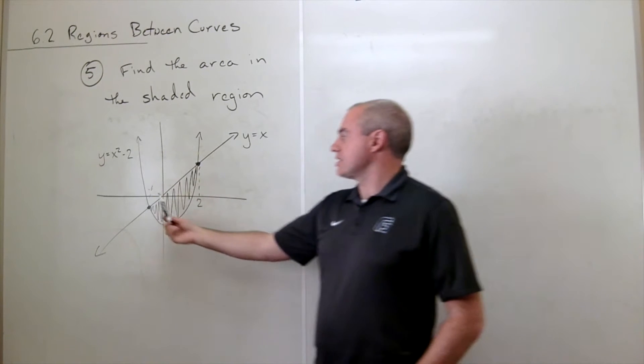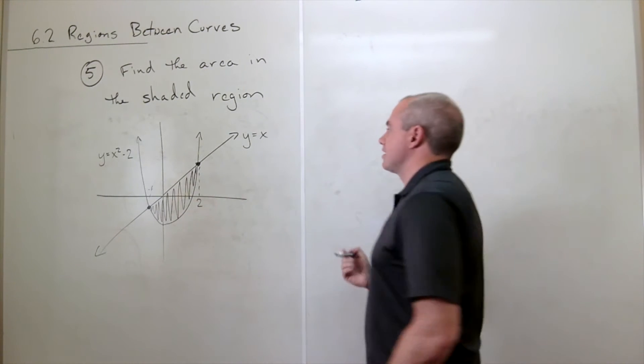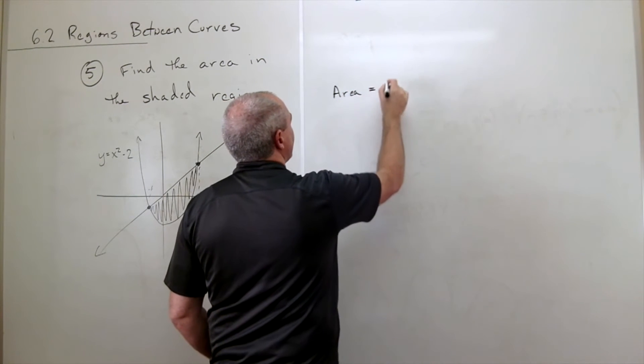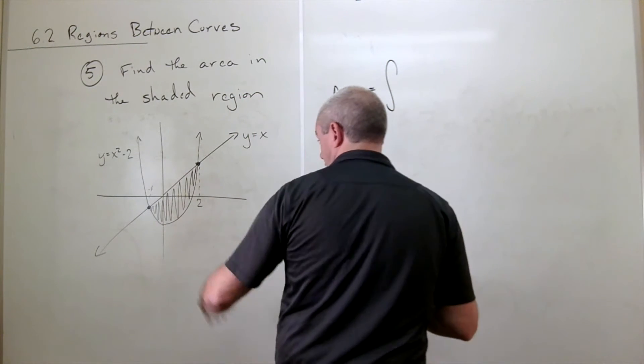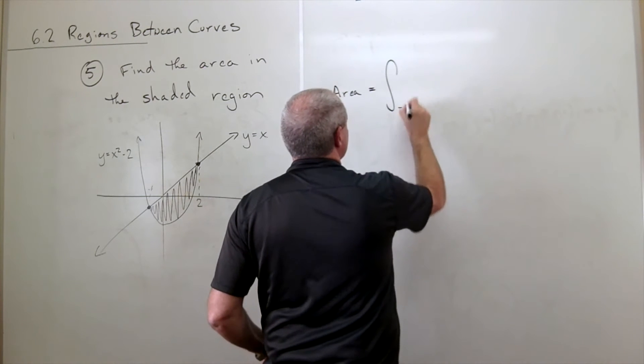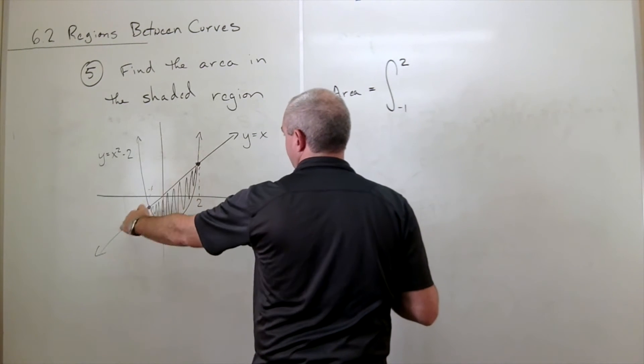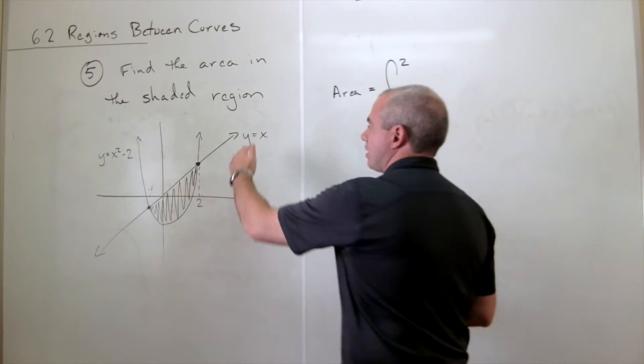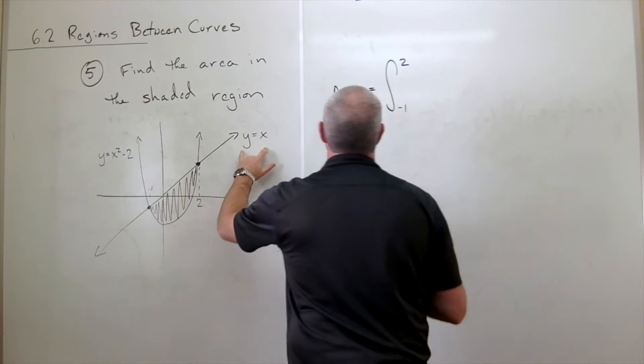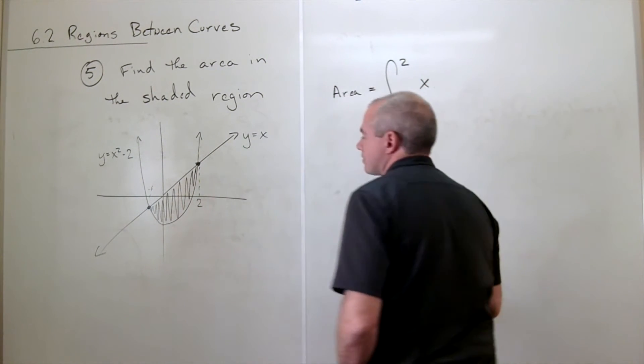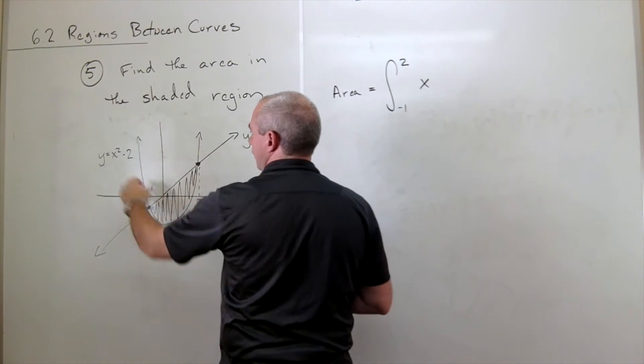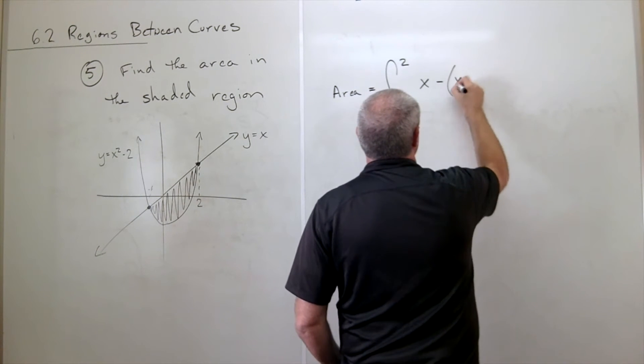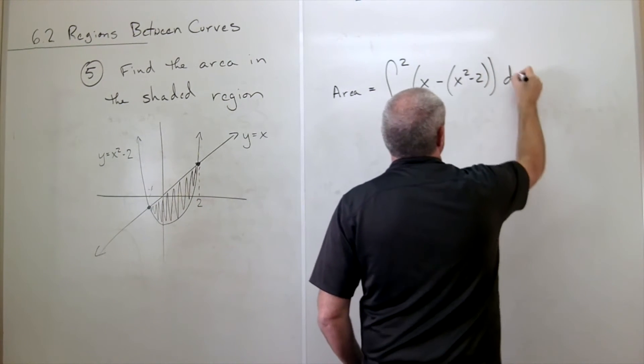So now that we know these x values, negative one and two, we can go ahead and set up this area. So the area that I'm looking for is equal to the integral from negative one to two of the top function, whatever the top function is, minus the bottom function, whatever that is. So in this case, my top function is just the line y equals x, and the bottom function is y equals x squared minus two, so minus, and I make sure to put this in parentheses, x squared minus two dx.